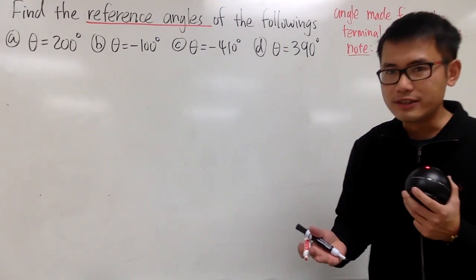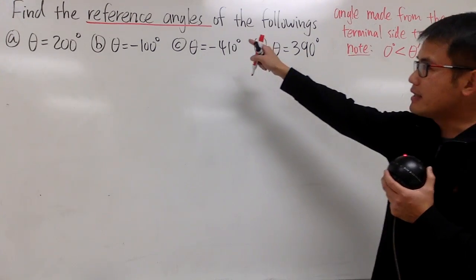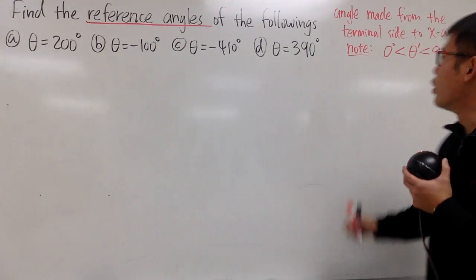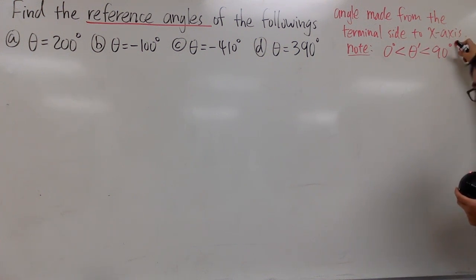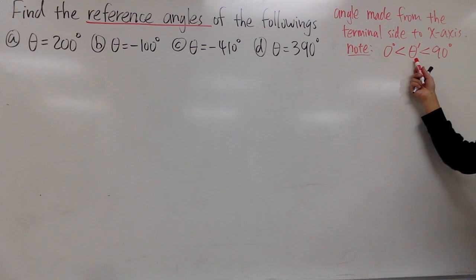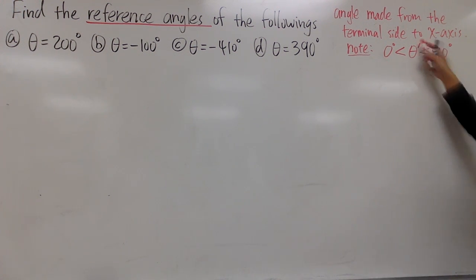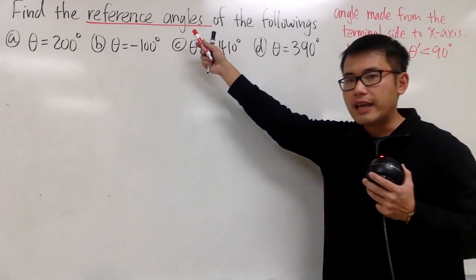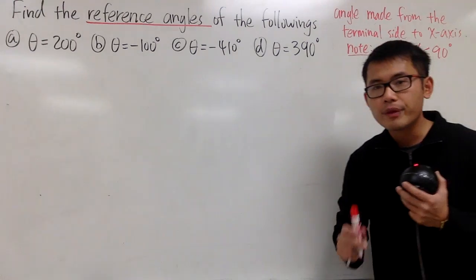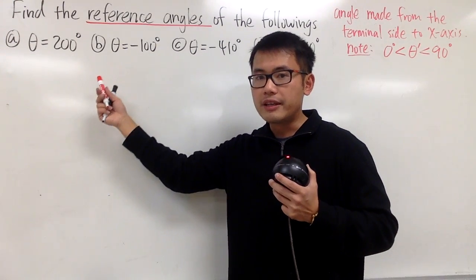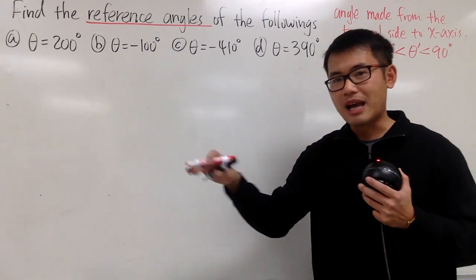In this video, I will show you guys how to find the reference angles for the angle θ. We have to first remember that the reference angle of an angle θ is the angle made from the terminal side of θ to the x-axis. Because of this, the reference angle is always going to be between 0 to 90 degrees. We use θ' for the reference angle notation. Also, the original angle θ cannot be quadrantal — it cannot be on the y-axis nor the x-axis.